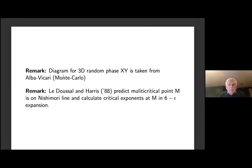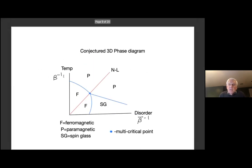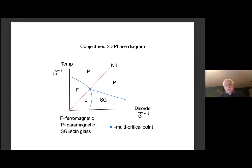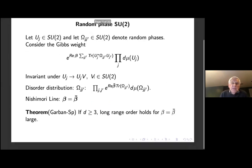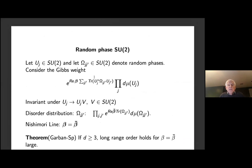There's a lot of work to be done to establish most of this diagram. As I said, what happens at high temperature is easy. What's happening at low temperature/low disorder is what we'll discuss. It's all this intermediate range we don't know what to do with yet. Now let me say what happens in the SU(2) case.